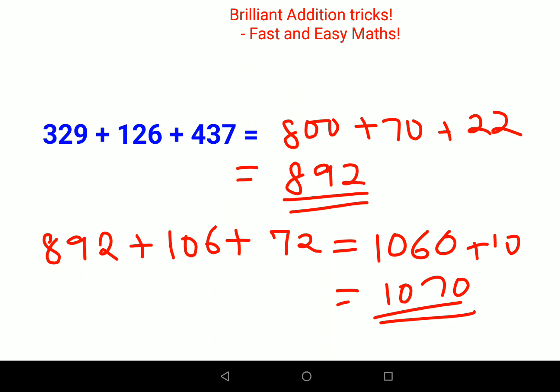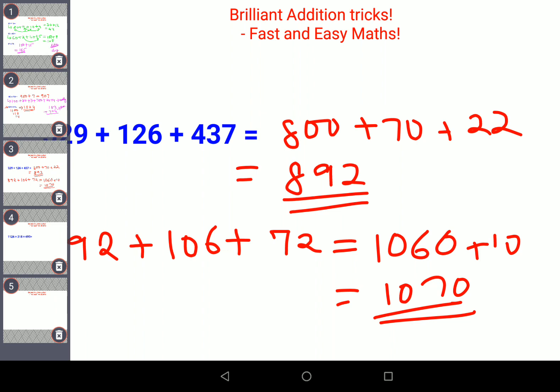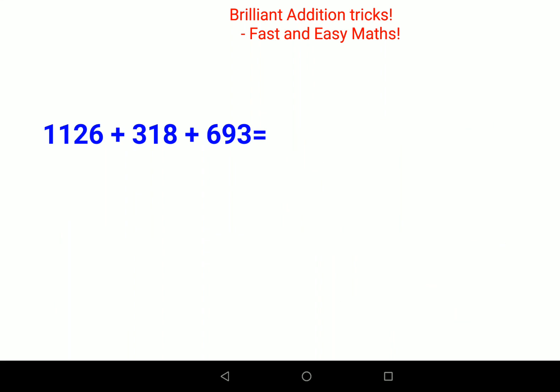Now here we're not just dealing with three digits, we're also dealing with a four digit number. In this case, we have a thousand and we don't have any number adding to thousands, so we'll just keep the thousand in our head. Now 100 plus 300 plus 600 is another thousand, so thousand plus thousand gets you two thousand.